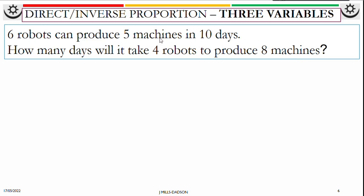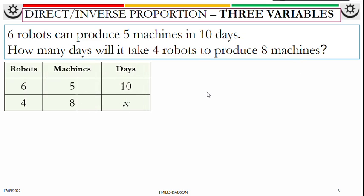Put robots, machines, and days into a table form. Four is robots, eight is machines, and days is what we don't know.